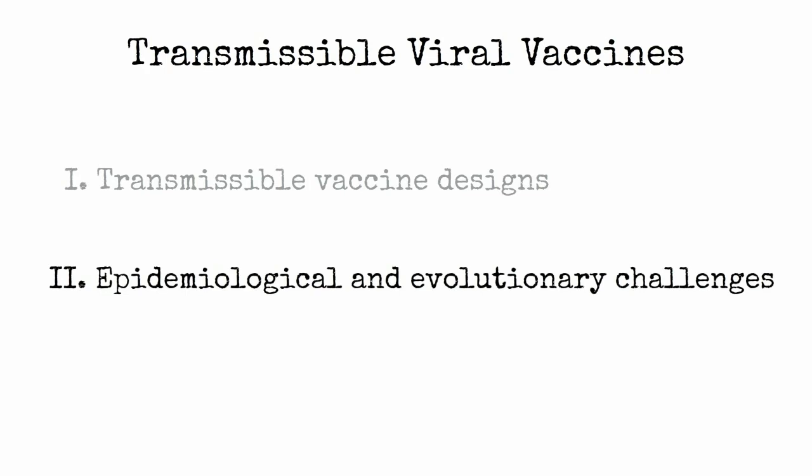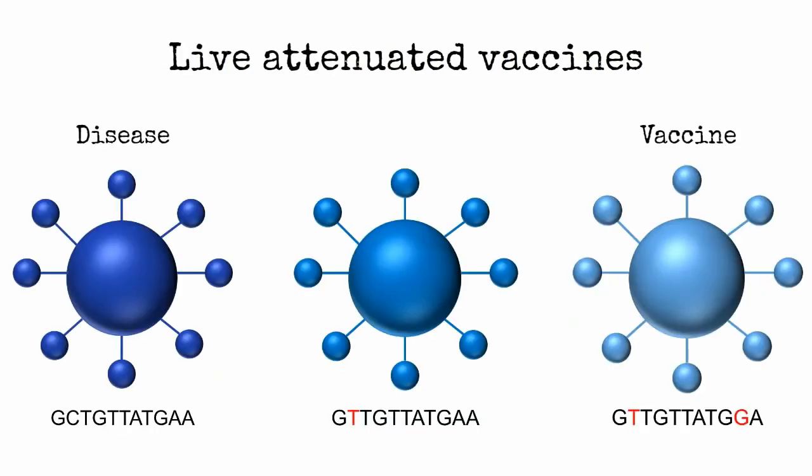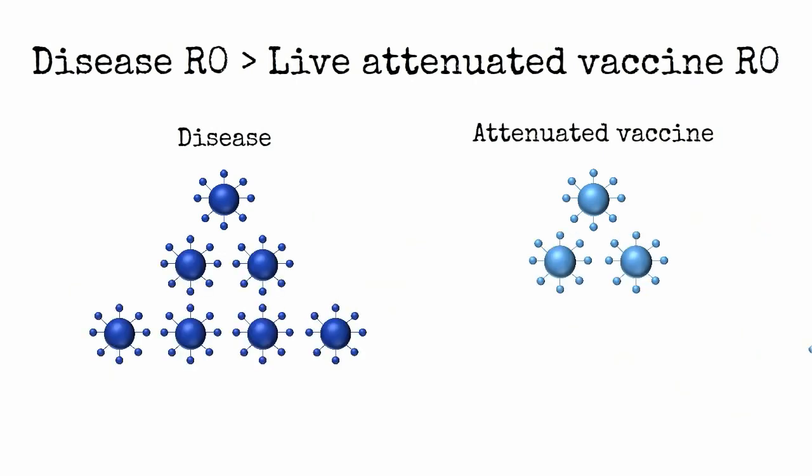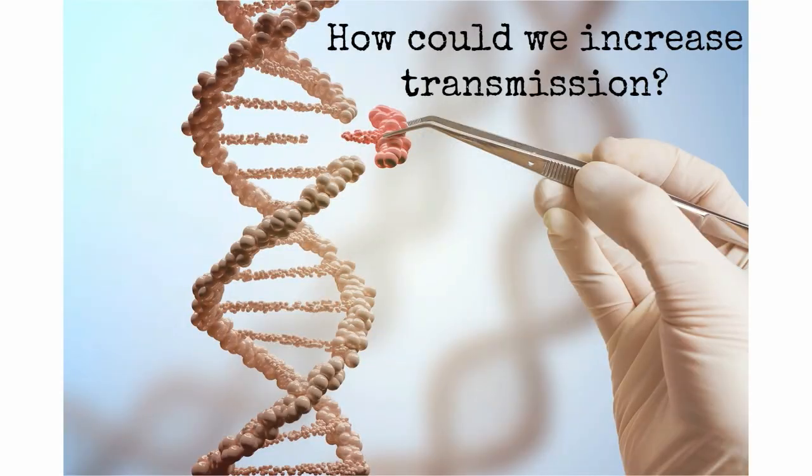For example, there are inherent limitations on the transmission of each design. The genetic weakening of attenuated vaccines means that they do not replicate well, so they may not be able to transmit well, and certainly not transmit as well as the wild type. We are not sure whether new methods of genetic engineering can overcome this poor transmission.